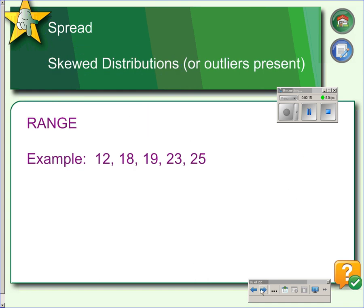We also have to describe spread. We're describing shape, center, spread, and unusual values. One way to describe spread is with the range. The range is the difference between the maximum and minimum values. So in this example, 25 minus 12 is 13, so our range is 13. Notice that the range is one number. It's not 12 to 25. That would be an interval. The range is just the single number of the difference between the max and the min.